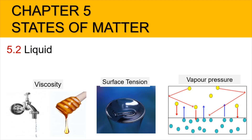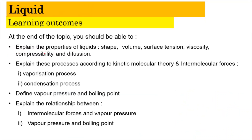Hi, Assalamualaikum and a very good morning. We are in chapter 5, the states of matter, subtopic 5.2, liquid. In this video, we're going to learn about the properties of liquids: shape, volume, surface tension, viscosity, compressibility, and diffusion. We'll also explain vaporization and condensation according to the kinetic molecular theory and intermolecular forces, define vapor pressure and boiling point, and explain their interrelationship.